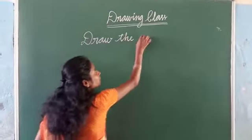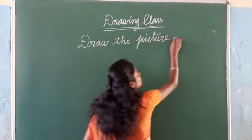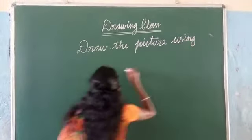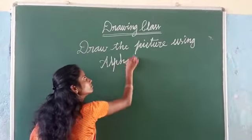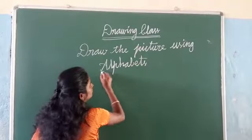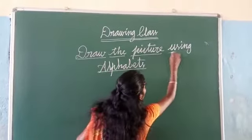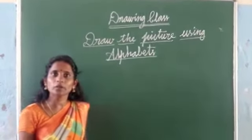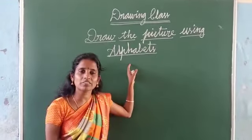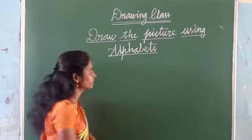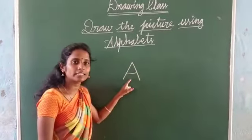Draw the picture using alphabets. Okay students, now we are going to draw the picture using alphabets, okay? First we go to A, letter A. This is letter A.